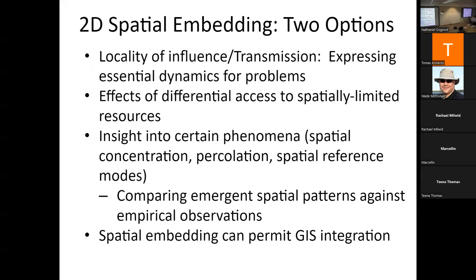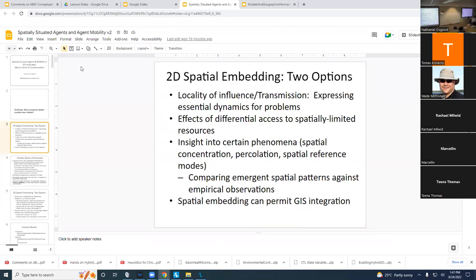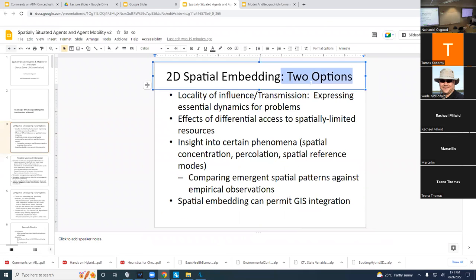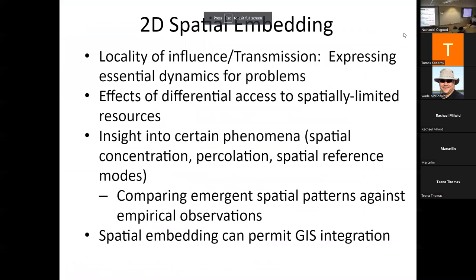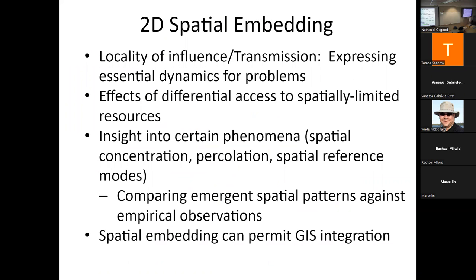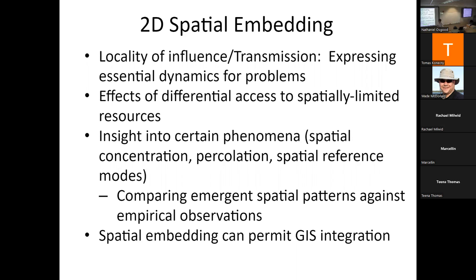So, why might you have 2D spatial embedding? Why might you put people in space? Well, there are a number of reasons that often pop up. You have local influence or local transmission — it could be transmission of pathogen, norms, knowledge, attitudes, beliefs, sometimes even imitative behaviors — which may be necessary for some of your interests. You want to capture the fact that people influence people nearby them, that physical proximity can influence.